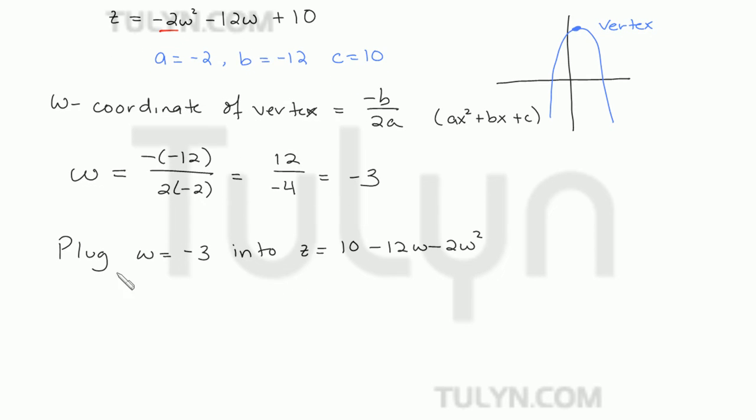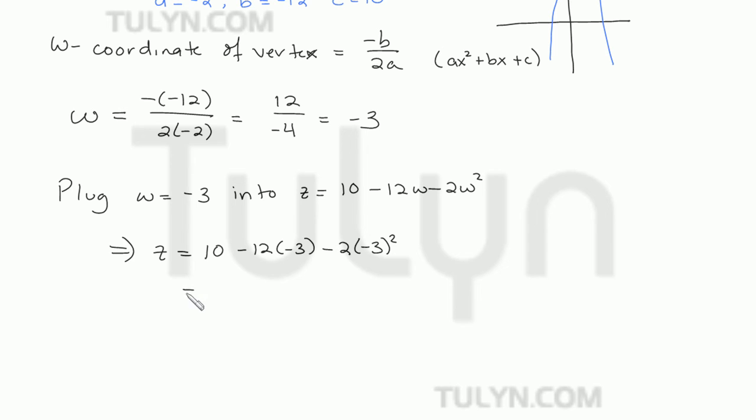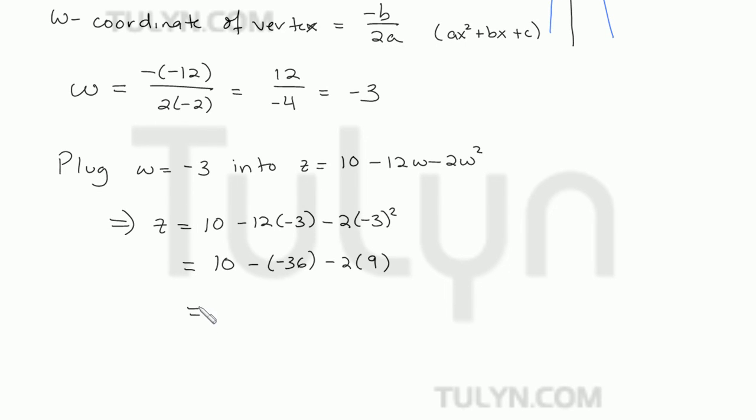So doing that, we get z is equal to 10 minus 12 times negative 3 minus 2 times negative 3 squared. So z is 10 minus negative 36 minus 2 times positive 9, which is negative 3 squared gives you positive 9.